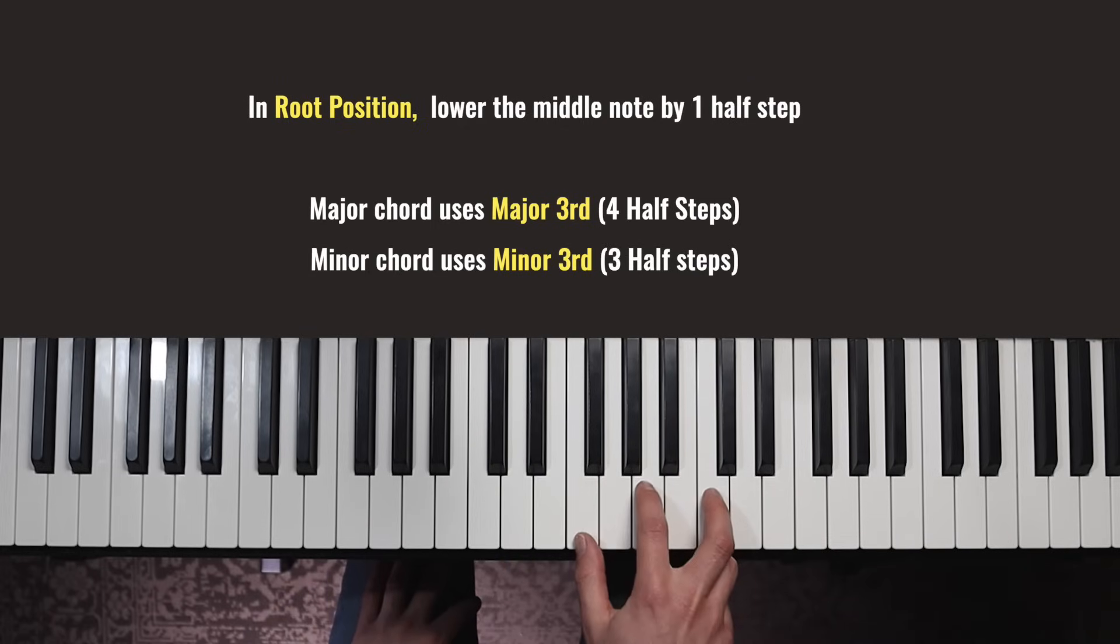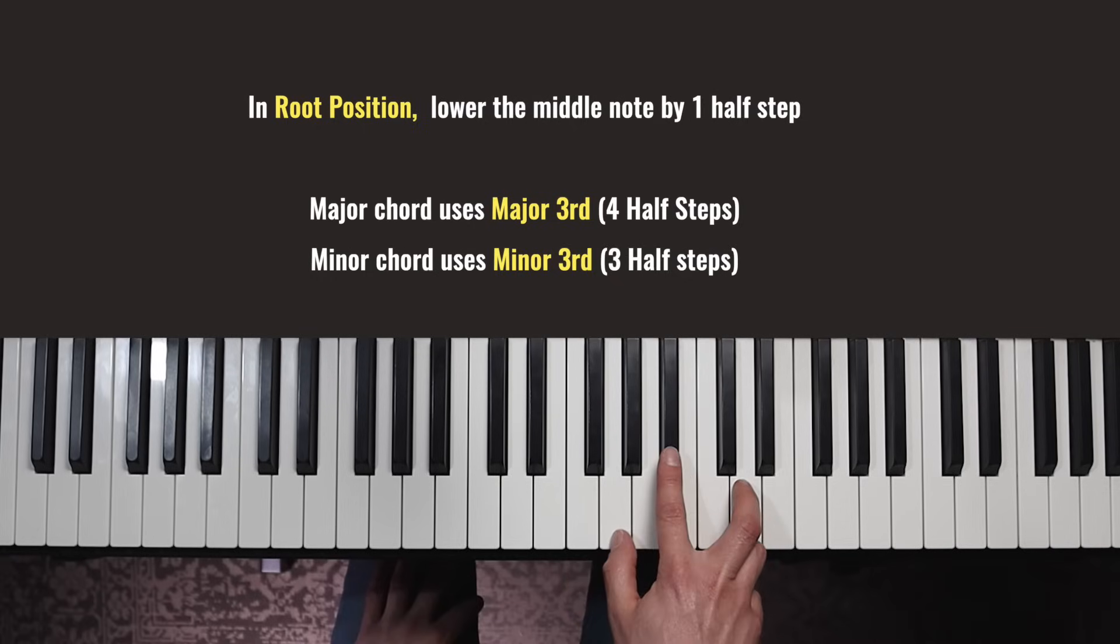So C major, F major and G major then turn into the triangle shapes with the black key in the middle. C major becomes C minor, F major becomes F minor, G major becomes G minor.